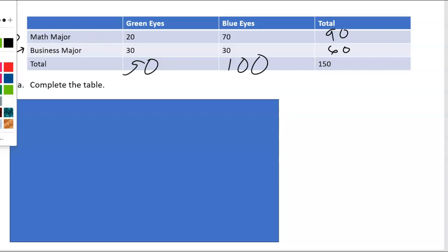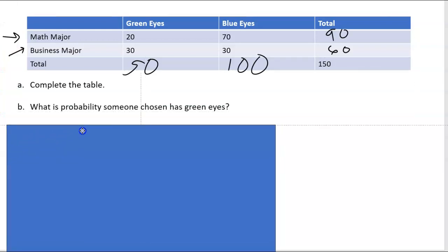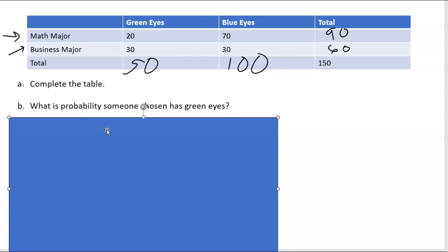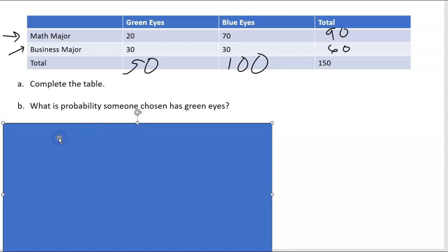Now that we have that taken care of, we are ready to do some problems. So first, what is the probability someone chosen has green eyes? Now that's basic, right? We're choosing someone, they have green eyes. So that's total.